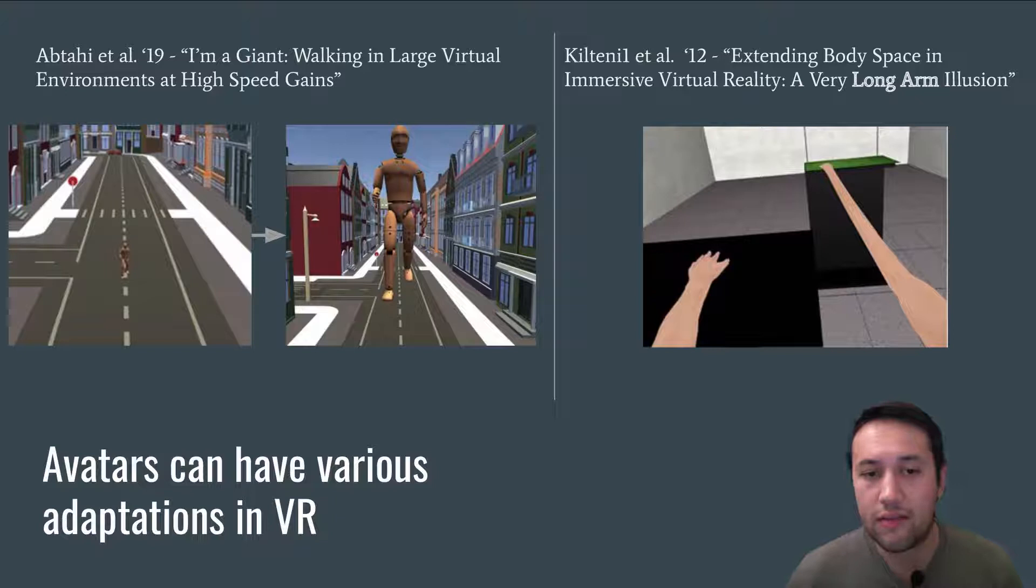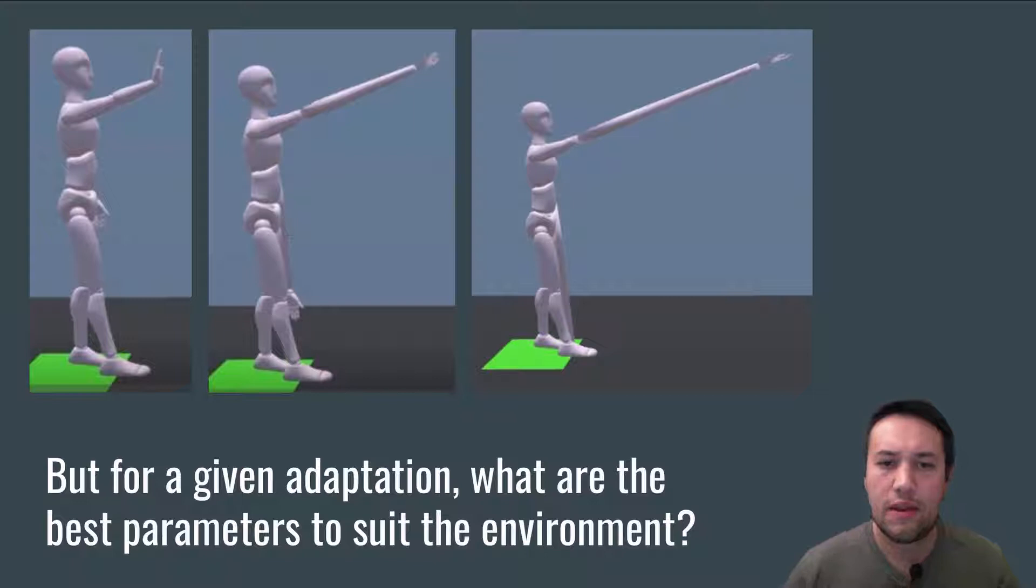But for a given adaptation, how do we best choose the right amount of adaptation or the right parameters for the adaptation that best fit a certain task or environment?